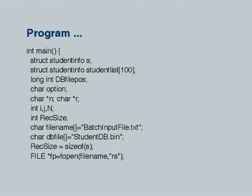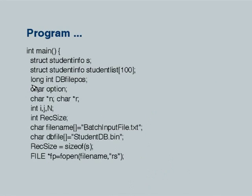Now the main program starts. This is where I declare the variables and arrays of all the types I want. Particularly of the student_info structure type, I want a variable s. I also want an array of 100, because I might want to put all the students' information in an array for consolidated printing or any other purpose. There is also a long int 'db_file_pos' — db_file_pos is the file position in the database file.